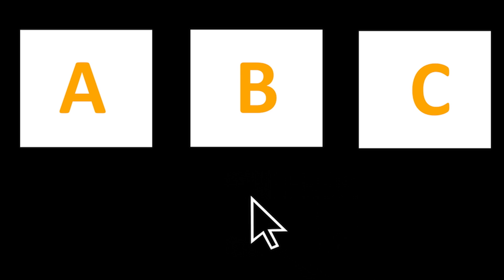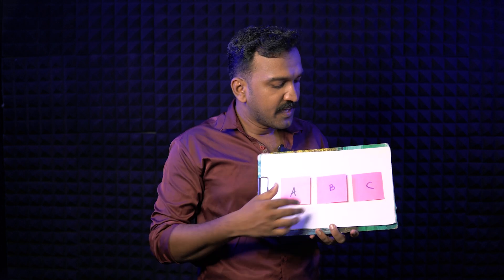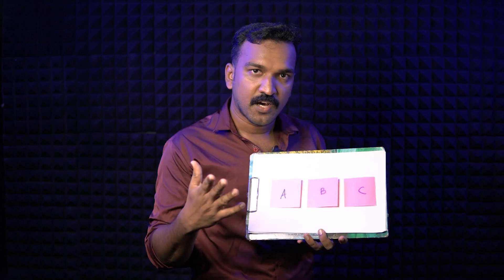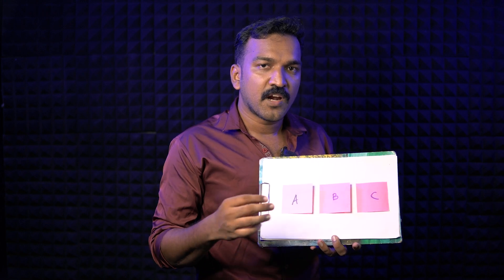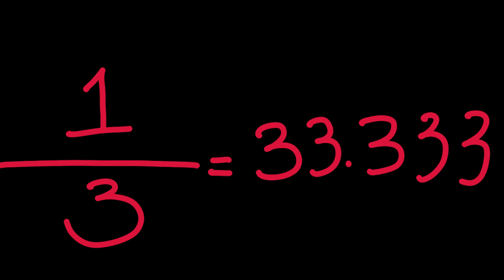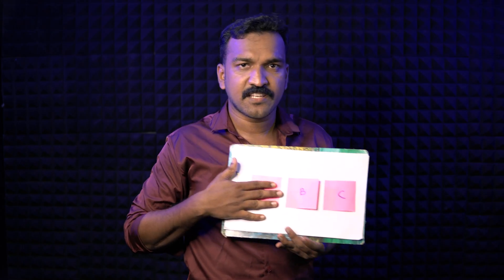Suppose A selects a door. Then A could be the car. In this three-door setup, you can select one door. There's a small selection probability. But A could be the car, or there are two other doors — one of which has the car.